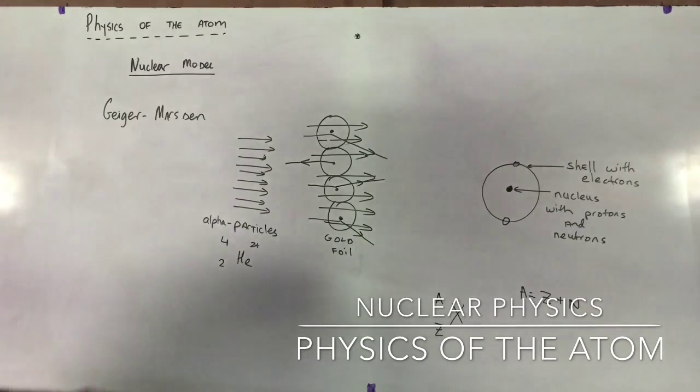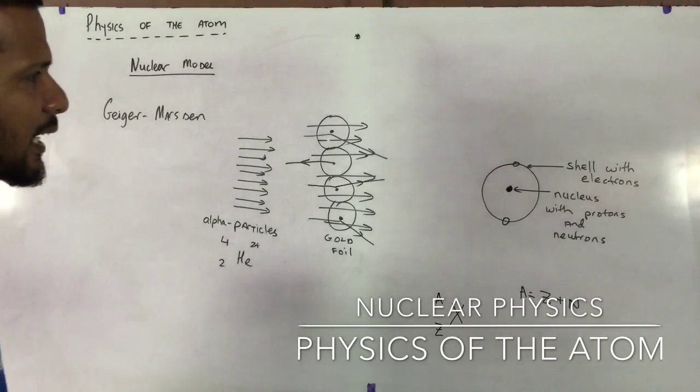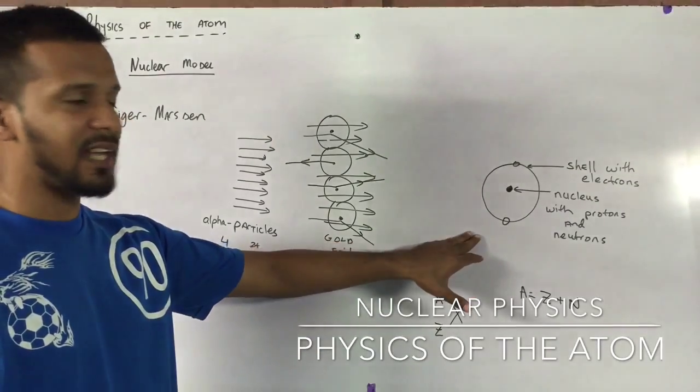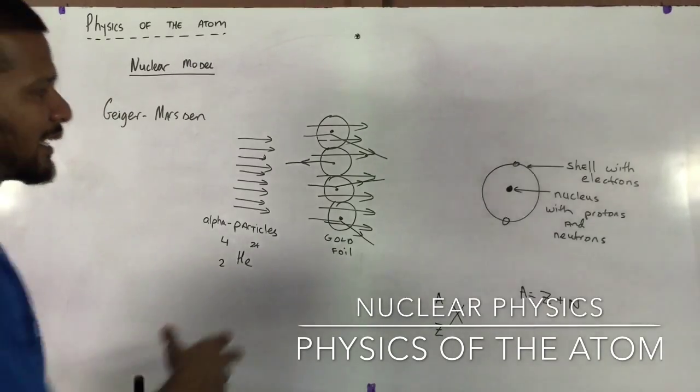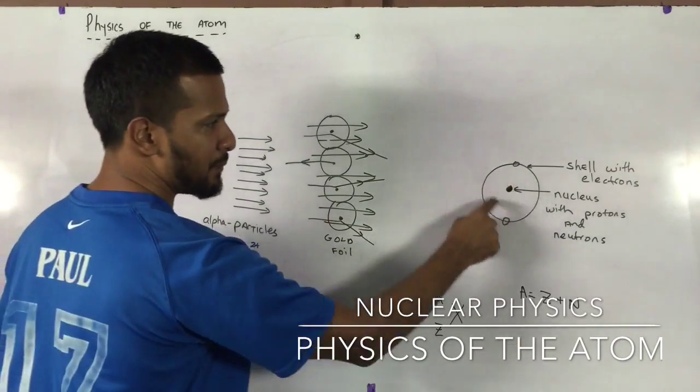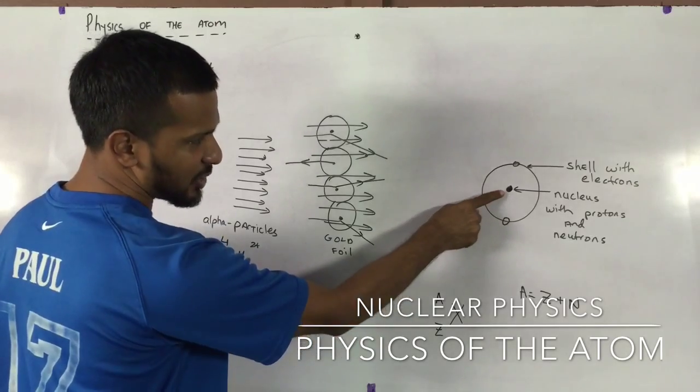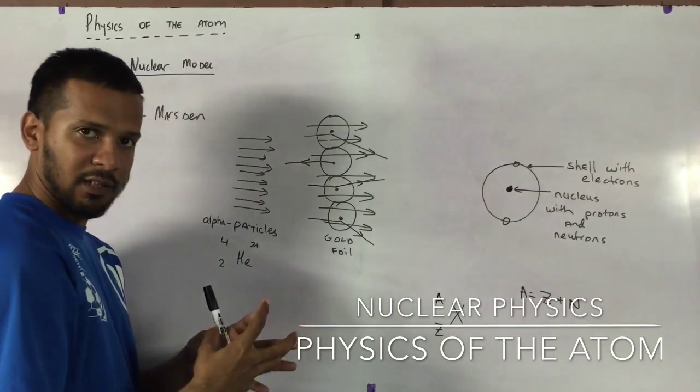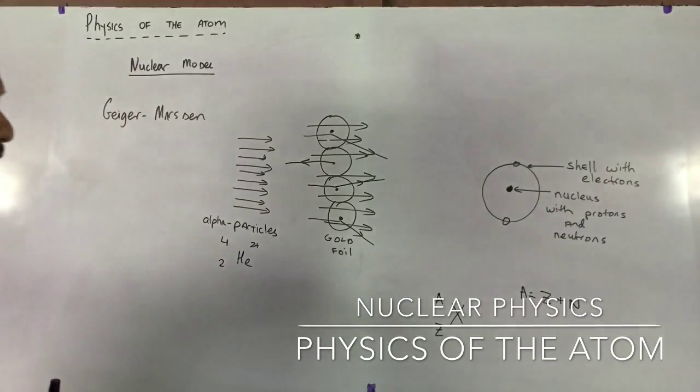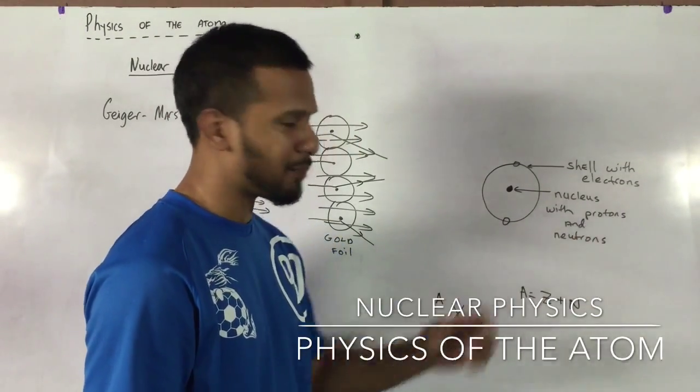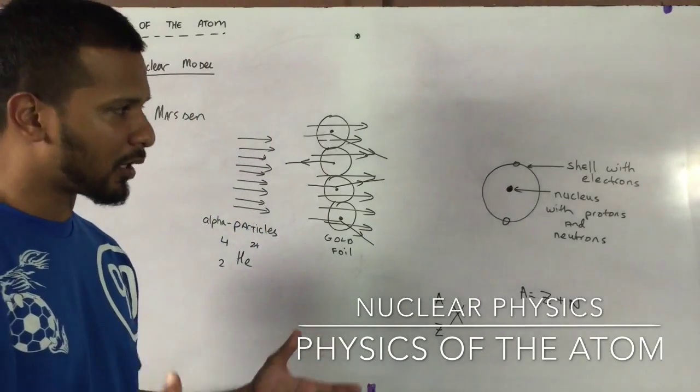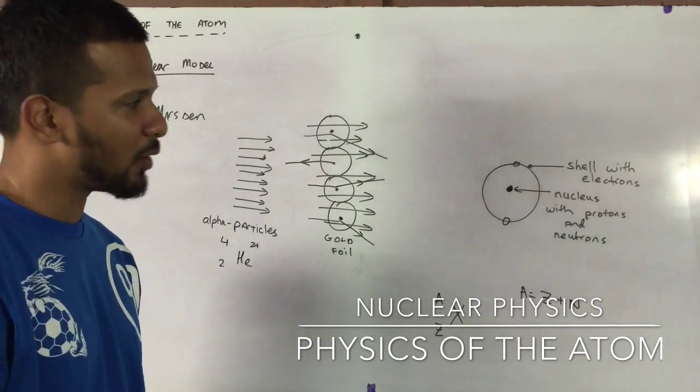So basically, Geiger and Marsden, together with Rutherford, they came up with this nuclear model of the atom. And the nuclear model of the atom is: atom is mainly made up of empty space, it has a central core that's positive. Later work by guys like Chadwick and so on, they came up with the electrons and all these different particles. So the nuclear model is the model that we will focus mainly on.